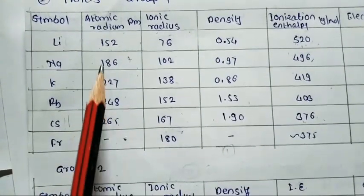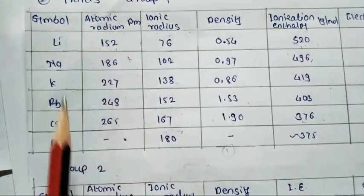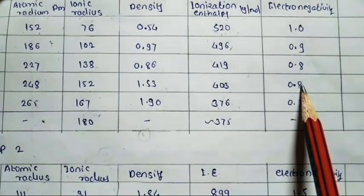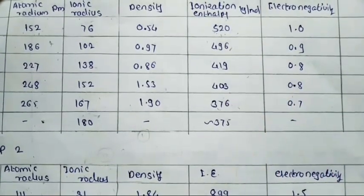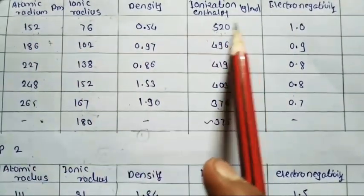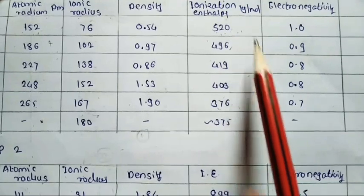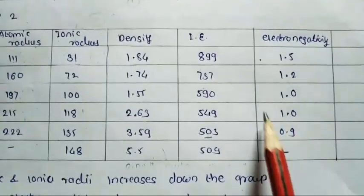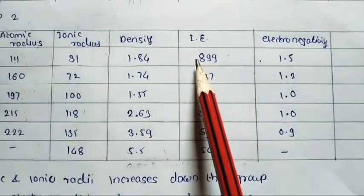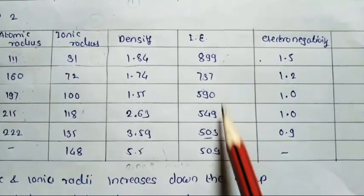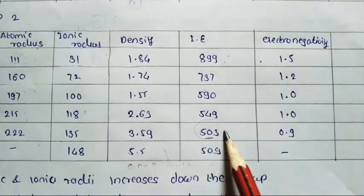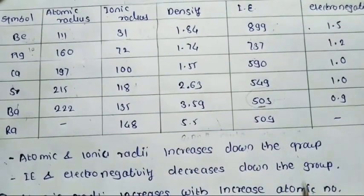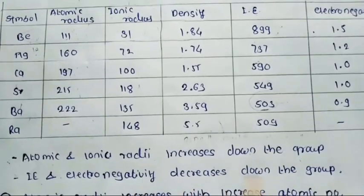For example, atomic radius increases from lithium (152 pm) to cesium (265 pm). Ionization enthalpy of lithium is 520 kJ/mol and of cesium is 376 kJ/mol. In group 2, ionization enthalpy of beryllium is 899 kJ/mol and of barium is 503 kJ/mol. So atomic and ionic radius increases down the group, while ionization enthalpy and electronegativity decrease down the group.